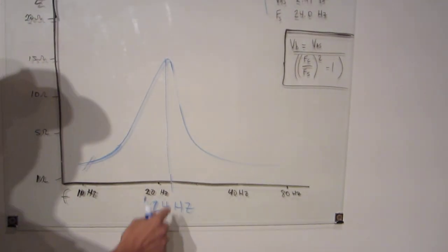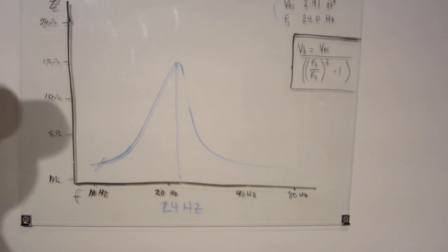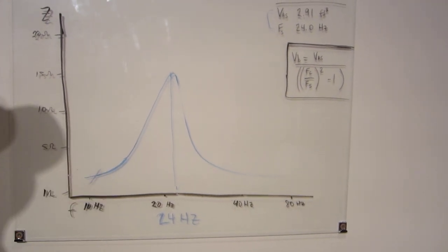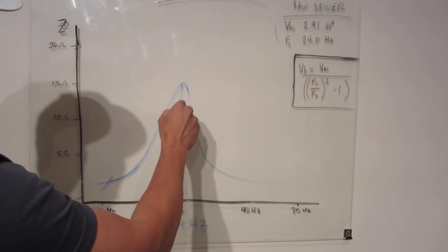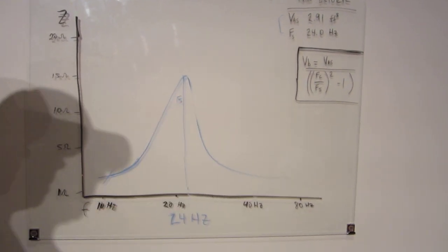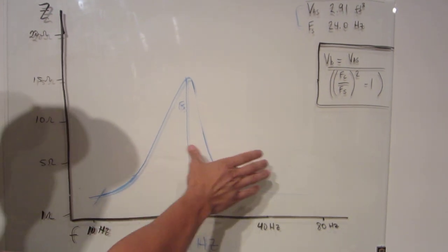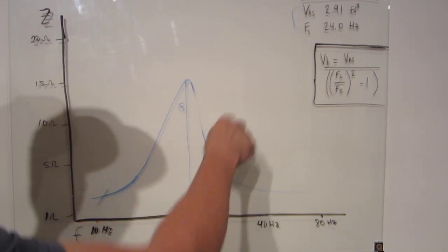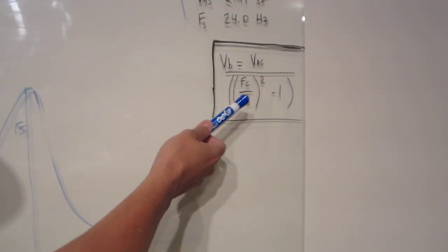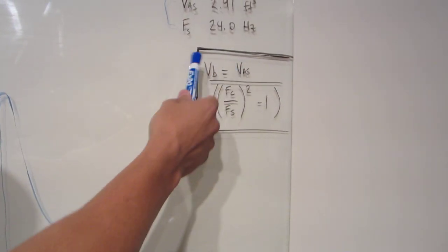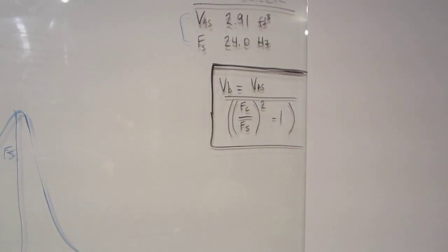So, all we have to do now is take this driver and mount it into the sealed box that we want to try to measure, and then re-measure this. This one's called our FS. Once we put it in the box and re-measure it, it's going to shift, and that new point is going to be called FC. You can see here in this formula, we're going to plug in FS, FC, VAS, which we measured, and we're going to end up knowing how big our box is.